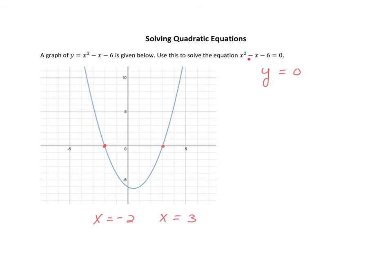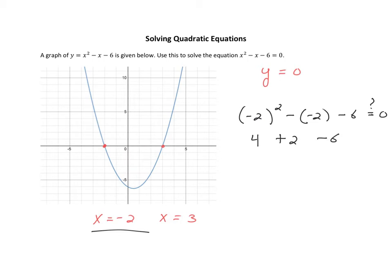Do these two numbers make this equation true? Let's check it out. I'm going to plug them in and see what happens. Starting with x is equal to negative 2: I would have negative 2 squared minus negative 2 minus 6, and that should equal 0. Negative 2 squared is 4, minus a negative 2 is actually a plus 2. And 4 plus 2 is 6, and 6 minus 6 is equal to 0. So that definitely checks out — this is for sure a solution.